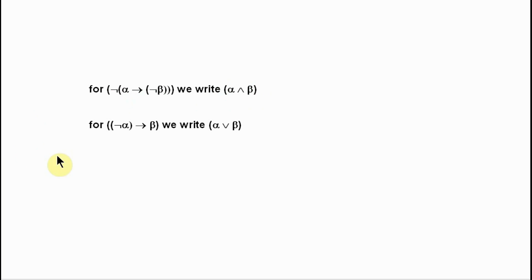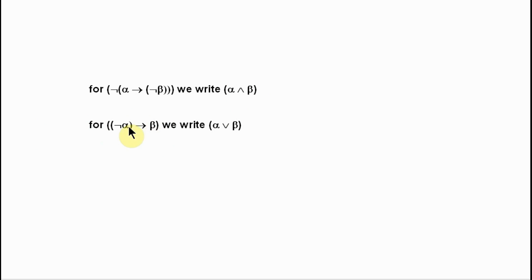The second of the new symbols is a V-shape the right way up. For open paren, open paren, this L on its side, alpha, close paren, arrow, beta, close paren — wherever such a wff appears — we're instead going to be able to simplify it by writing open paren, the wff alpha, this V symbol, followed by the wff beta, close paren.